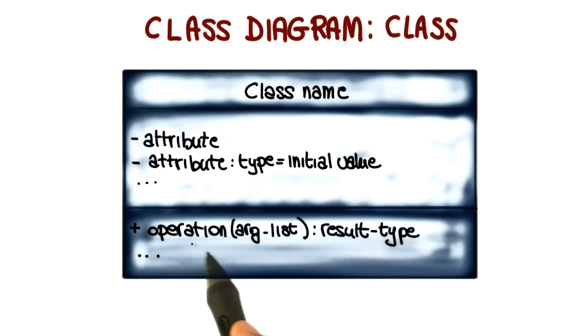Finally, the third part of the class consists of the operations. Normally, operations are represented by name, with a list of arguments that the operation takes as input, and with the result type—the type of the result produced by the operation.